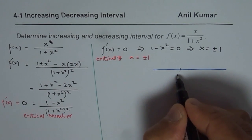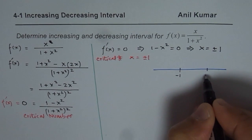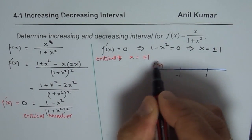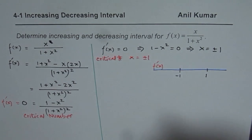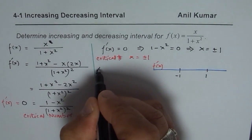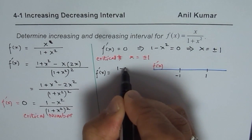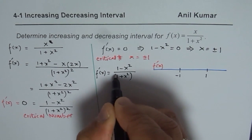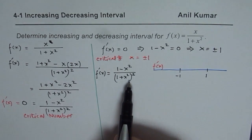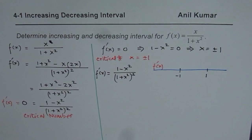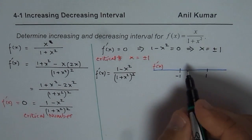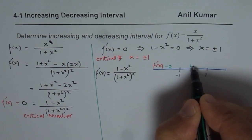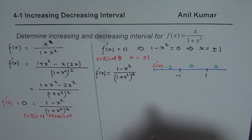We mark x = −1 and x = +1 on the number line. We analyze the sign of f'(x) = (1 − x²) / (1 + x²)² on each interval. Since the denominator is always positive, we only consider the numerator with test points. We choose x = −2 on the left side of −1, x = 0 in between, and x = +2 on the right side of +1.